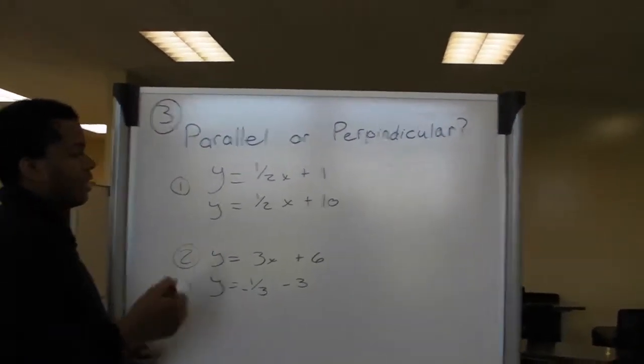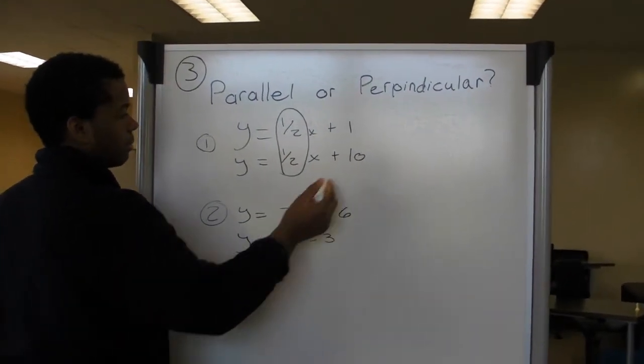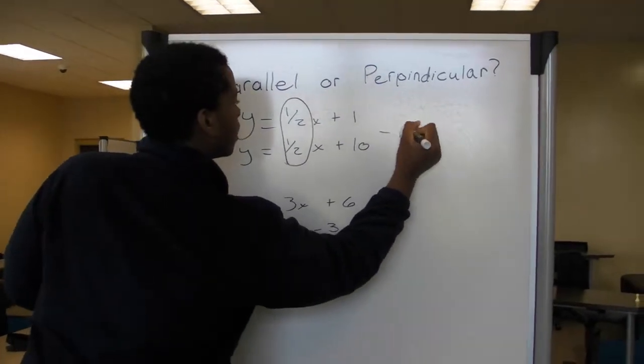See right here? In this equation, the two slopes are the same. Therefore, they're parallel. We got the first one right.